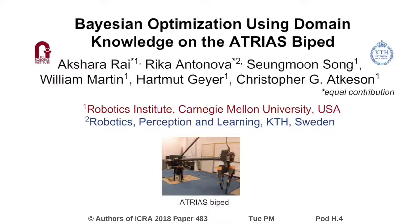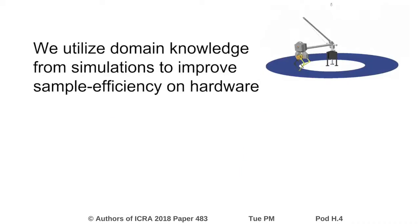We present our work on Bayesian optimization with domain knowledge. Locomotion controllers are difficult to tune in simulation only due to simulation-hardware mismatch. Bayesian optimization can be used to optimize on the robot, but sample efficiency deteriorates in high dimensions. We utilize domain knowledge from simulations to improve sample efficiency on hardware.